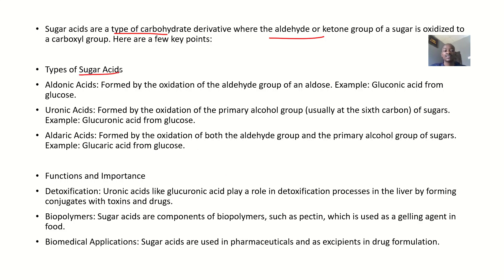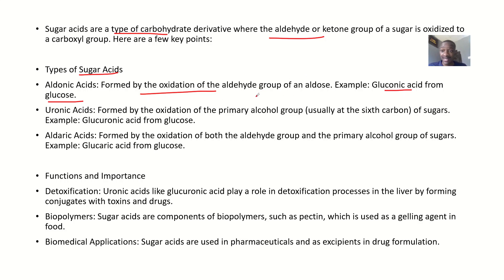The types of sugar acids: First, aldonic acids — these are formed by oxidation of the aldehyde group of an aldose. Examples include gluconic acid, formed from glucose.